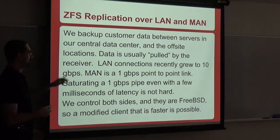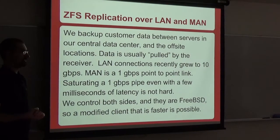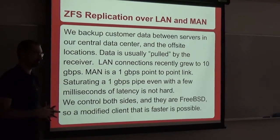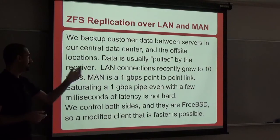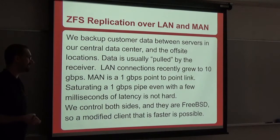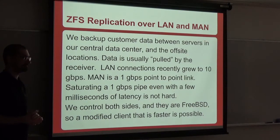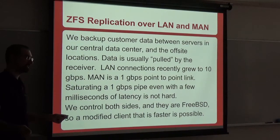In this case, data is pulled from the production server to the backup server by the backup server connecting to the production server. We'll see why pull versus push matters later. We recently upgraded many LAN connections from one or two single 1-gigabit connections to 10-gigabit, introducing a whole new set of bottleneck problems we didn't know were there. Our metropolitan connection is a 1-gigabit point-to-point link with very low latency — about 0.2 milliseconds between cities. Both ends are FreeBSD, so if we develop patches, we can deploy them on both sides.